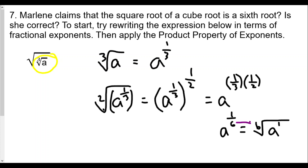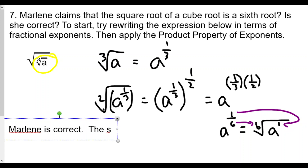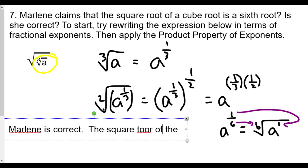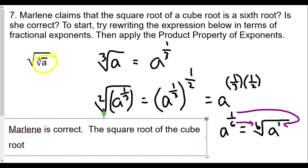The denominator is the index of the radical and the numerator is the exponent of the base. So a to the 1/6 means we have the 6th root of a. Marlene is correct: the square root of the cube root of a is the 6th root of a.